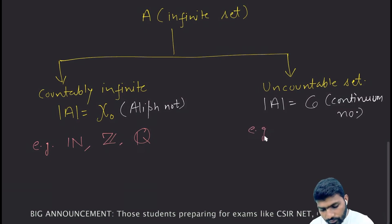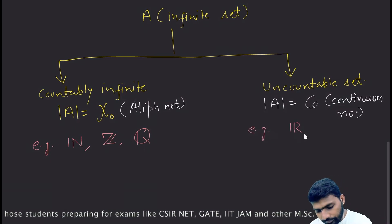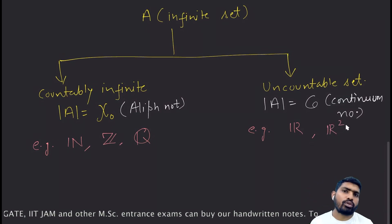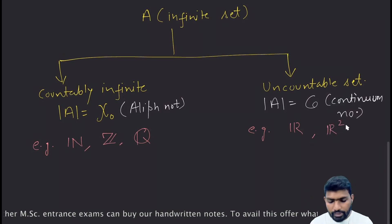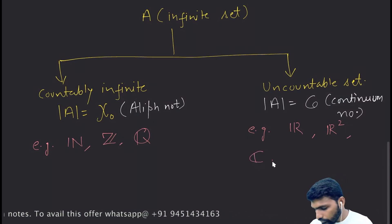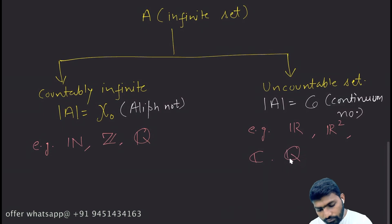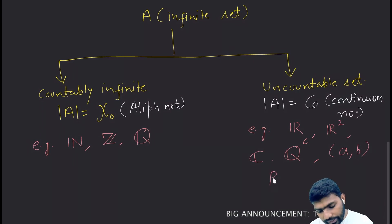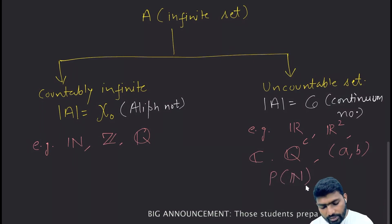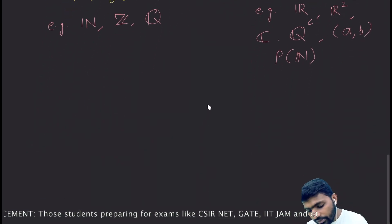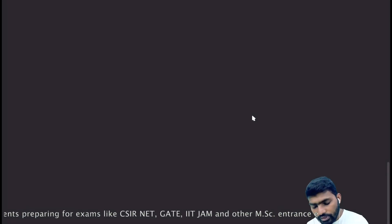Examples of uncountable sets are: the set of real numbers, R², which is the Cartesian product of two sets of real numbers, the set of complex numbers, the set of irrational numbers, any interval (a, b), and the power set of natural numbers — all of these are uncountable sets.